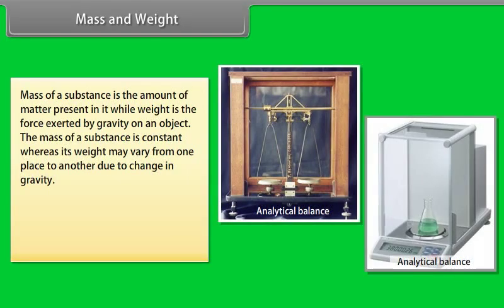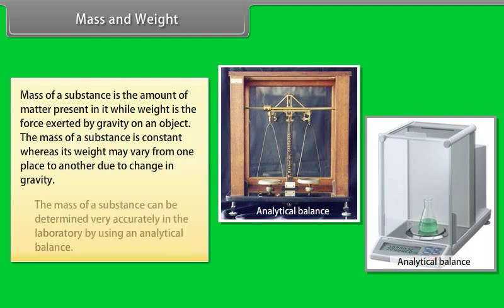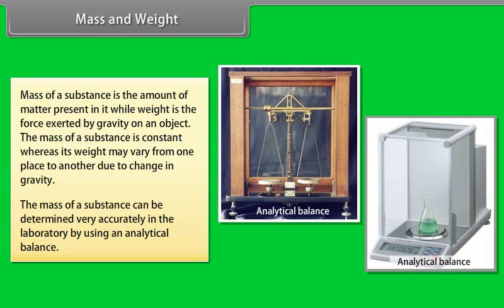Mass of a substance is the amount of matter present in it, while weight is the force exerted by gravity on an object. The mass of a substance is constant, whereas its weight may vary from one place to another due to change in gravity. The mass of a substance can be determined very accurately in the laboratory by using an analytical balance.